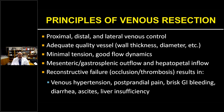The principles of venous resection require proximal and distal control and control of lateral branches. You need adequate vessel quality — wall thickness and diameter — and the further down you go on the SMV, the thinner the wall and less likely it is to hold sutures. There must be minimal tension on the anastomosis and good flow dynamics after reconstruction. The ultimate goal is to reconstitute both mesenteric and gastrosplenic outflow and liver inflow. Failure to do this results in venous hypertension, postprandial pain, brisk GI bleeding, mucosal swelling, malabsorption, and potentially ascites and liver insufficiency.